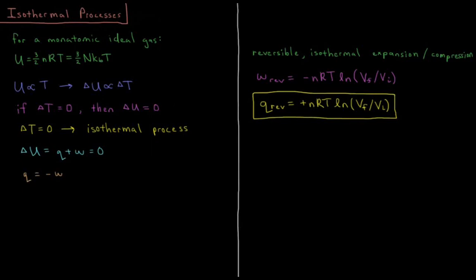This video will discuss isothermal processes in thermodynamics, specifically as it relates to the expansion and compression of ideal gases. For a monatomic ideal gas, we showed in the statistical mechanics playlist that the internal energy is equal to 3/2 nRT or 3/2 nKT — number of moles times gas constant times temperature, or number of particles times Boltzmann constant times temperature. So the internal energy is directly proportional to the temperature.